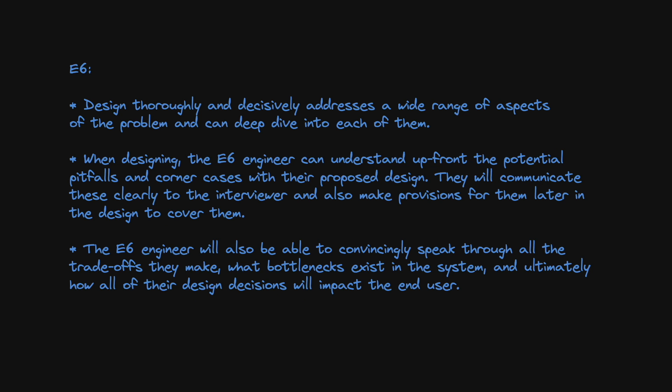At the E6 level, you'll need to create a design that thoroughly and decisively addresses a wide range of the key aspects of the problem, and deep dive into each of them with well-informed decisions. An E6 engineer understands upfront what the potential pitfalls and corner cases are with their design, communicates these clearly to the interviewer, and makes provisions for them later in the design. The E6 engineer also takes into account the future maintainability and extensibility of the system, making decisions that allow for future updates without needing to drastically refactor. They'll convincingly speak through all trade-offs, what bottlenecks exist, and how all design decisions impact the end user — typically without prompting from the interviewer.